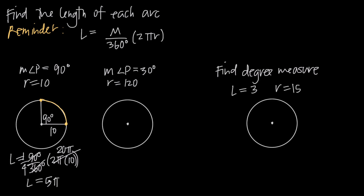We can leave the length of the arc in terms of π. Sometimes you'll be asked for a decimal approximation, in which case you want to plug 3.14 in for π. Sometimes you'll be asked for a fractional approximation, in which case you want to plug 22 over 7 in for π. But in this example, we're going to leave arc length in terms of π, so the length of this arc is 5π.